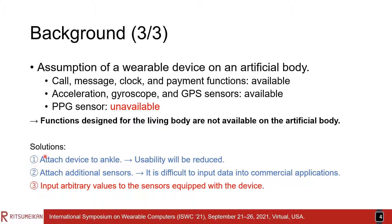A problem arises when wearable devices are used on artificial bodies. The call, message, clock, and payment functions, and the acceleration, gyroscope, and GPS sensors equipped with wearable devices are available on artificial bodies. However, the PPG sensor is unavailable on artificial bodies.